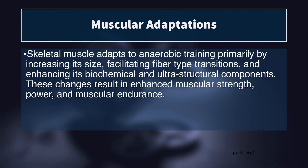There are three primary ways that a muscle adapts to anaerobic training: by increasing in size, through fiber-type transitions, and by enhancing its biochemical and ultra-structural components. Depending on the specific type of anaerobic training that you're doing, these changes result in enhanced muscular strength, power, or endurance.